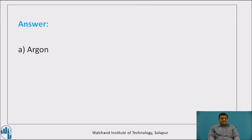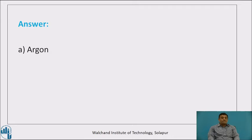The answer is Option A: argon. Because argon gas is an inert gas. Why do we use inert gases as a mobile phase? Because it is expected that the gas used as a mobile phase should not react with our chemical compound. If it reacts with our chemical compound, it may form another product. Its role is only to separate a mixture into pure components. Therefore, we use inert gases as a mobile phase in gas chromatography.